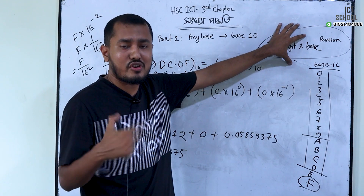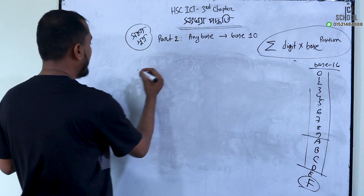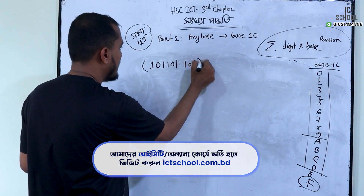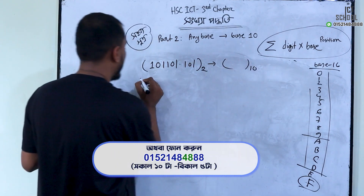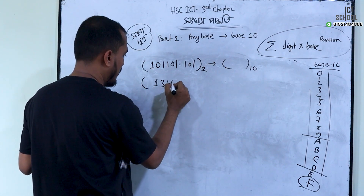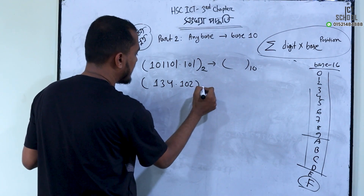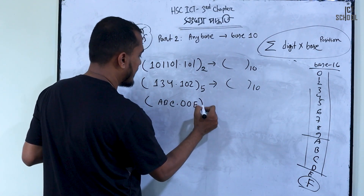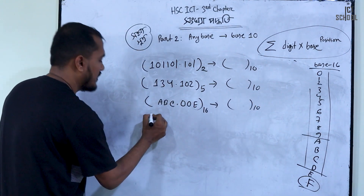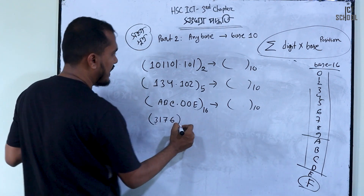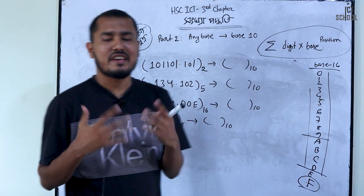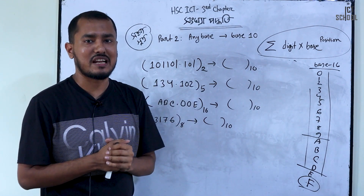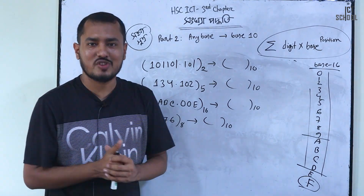It will be very simple. If you have any questions, you will be able to chat in the Facebook group. Practice: C4.102 in base 5 — convert to base 10. BC.00E in base 16 — convert to base 10. 3176 in base 8 — convert to base 10. Thank you so much for joining us and we'll see you in the next video.